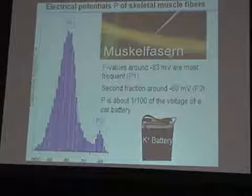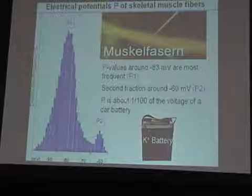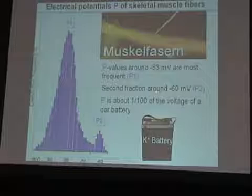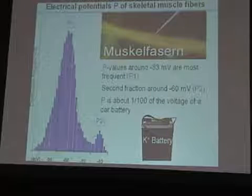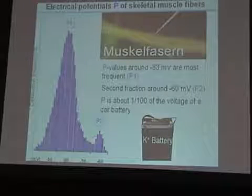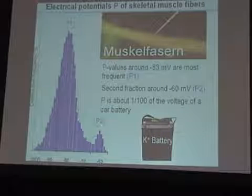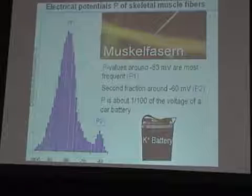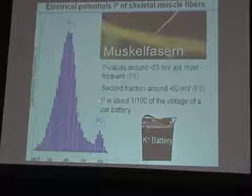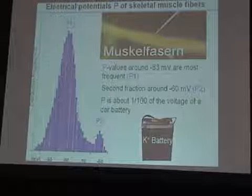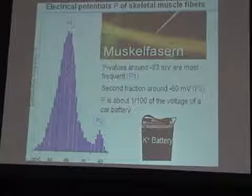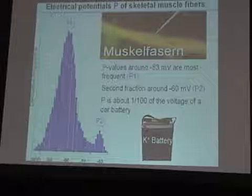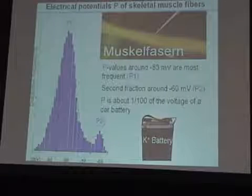And surprisingly, there is a second fraction of muscle fibers which have a membrane potential of about minus 60 millivolts. Here is the peak value of minus 60 millivolts, and we call this fraction P2. What we can learn is that the potential is about one hundredth of the voltage of a car battery.